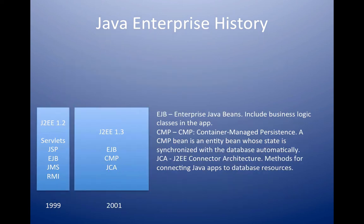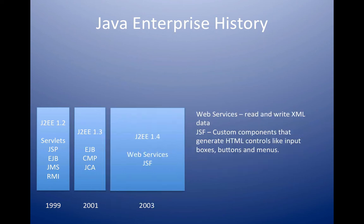In 2001, there was an update to version 1.3, which introduced things called Enterprise Java Beans, which we'll see. Then in 2003, the next upgrade — version 1.4 — introduced what's called JSF, and we'll be using that in some of our tutorials.